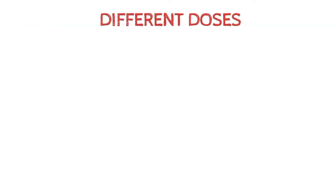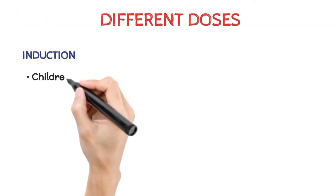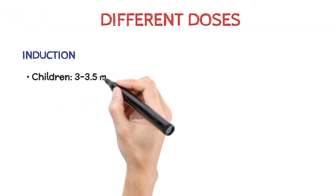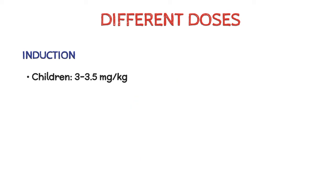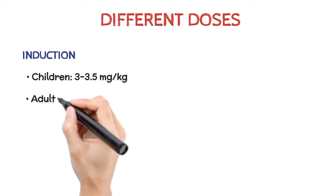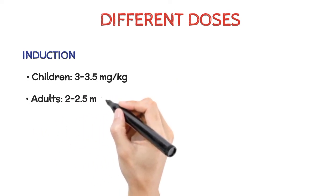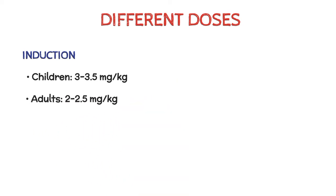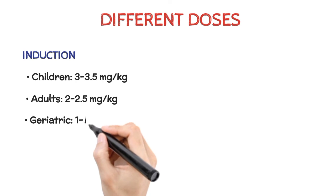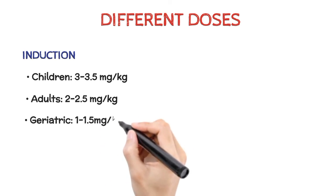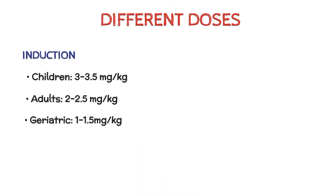Different doses — Induction. Children: 3–3.5 mg per kg. Adults: 2–2.5 mg per kg. Geriatric patients: 1–1.5 mg per kg.